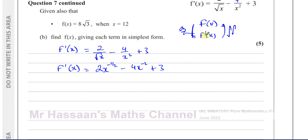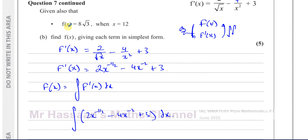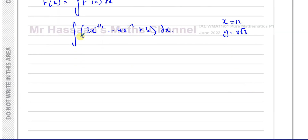So F(x) is the integral of F'(x) with respect to X. I rewrite F'(x) as 2X to the power of negative 1/2, minus 4X to the power of negative 2, plus 3, and integrate that with respect to X. To integrate, you add 1 to the power and divide by the new power. So for the first term: add 1 to negative 1/2 gives positive 1/2, so 2X to the power of 1/2 divided by 1/2.